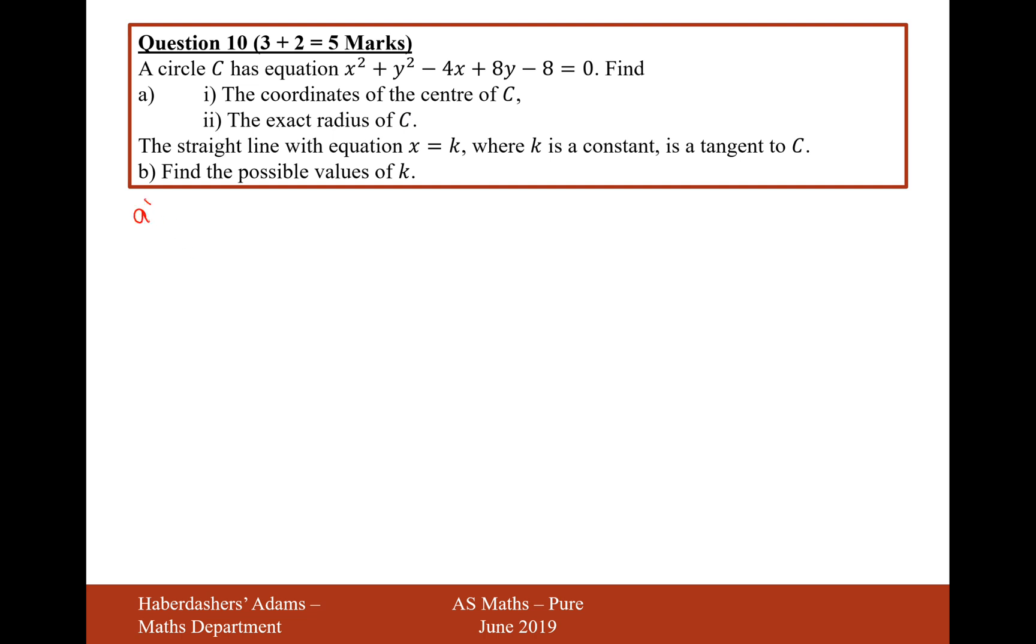In part A we're going to do completing the square with both the x variable and the y variable. Let's give that a go. Completing the square with the x variable gives us x minus 2 squared minus 4. And then with the y variable, y squared plus 8y gives us y plus 4 squared minus 16. And then we've got the minus 8 equals 0.